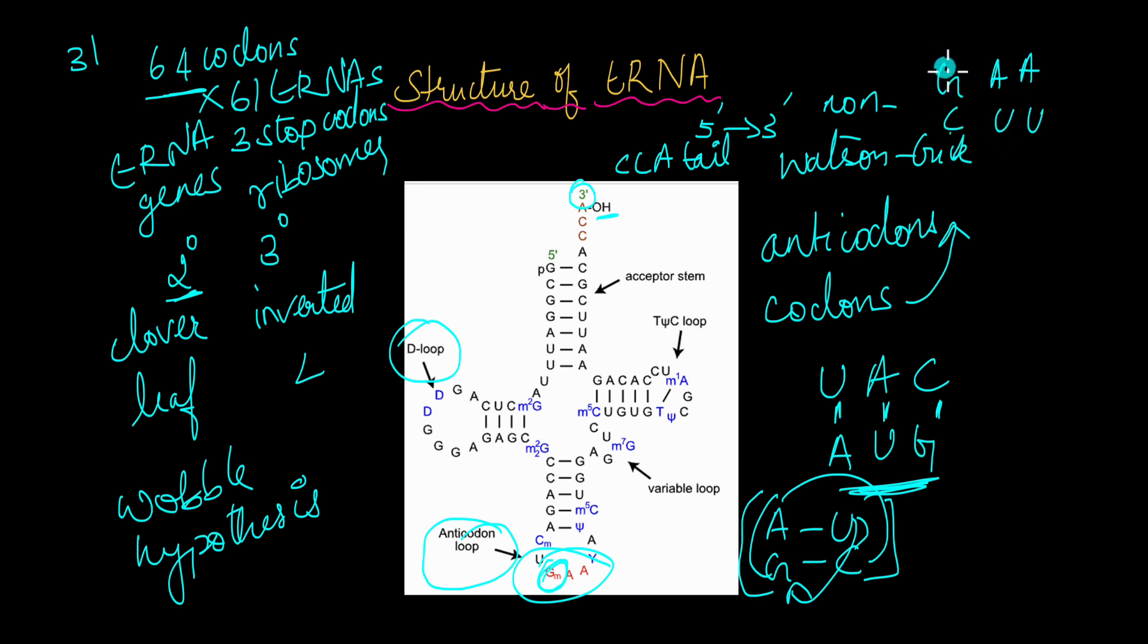But because of the wobble hypothesis, this G can base pair with say A, U, U as well. It can form temporary non-Watson-Crick base pair during the translation process. This helps just 31 tRNAs to read all the 61 codons in the mRNA sequence. So we will take a closer look at this anticodon loop in just a while. But before that, let's take a look at this CCA tail.